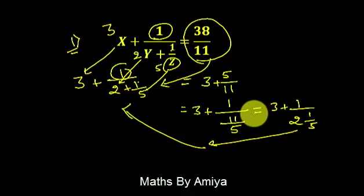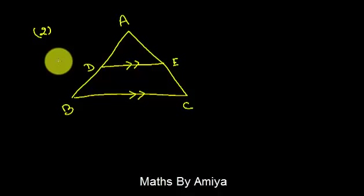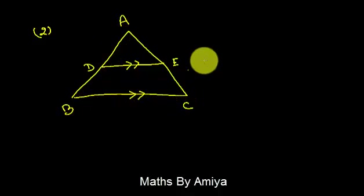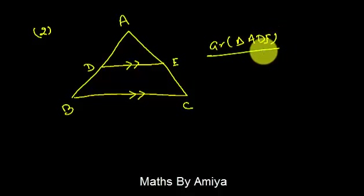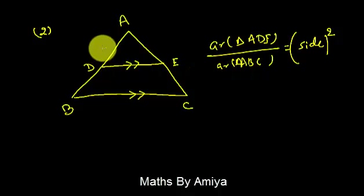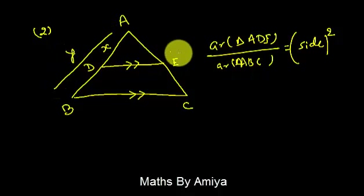I hope it is clear. Now move to the second concept, that is nothing but similarity. Our second concept is the concept of similarity with parallel lines. When we have triangle ABC and line DE is parallel to BC, we can say triangle ADE is similar to triangle ABC. According to similarity, the area of smaller triangle ADE to area of bigger triangle ABC is in the same ratio of the sides but squared. So if one side is x and the complete is y, the area ratio is nothing but x by y whole square.